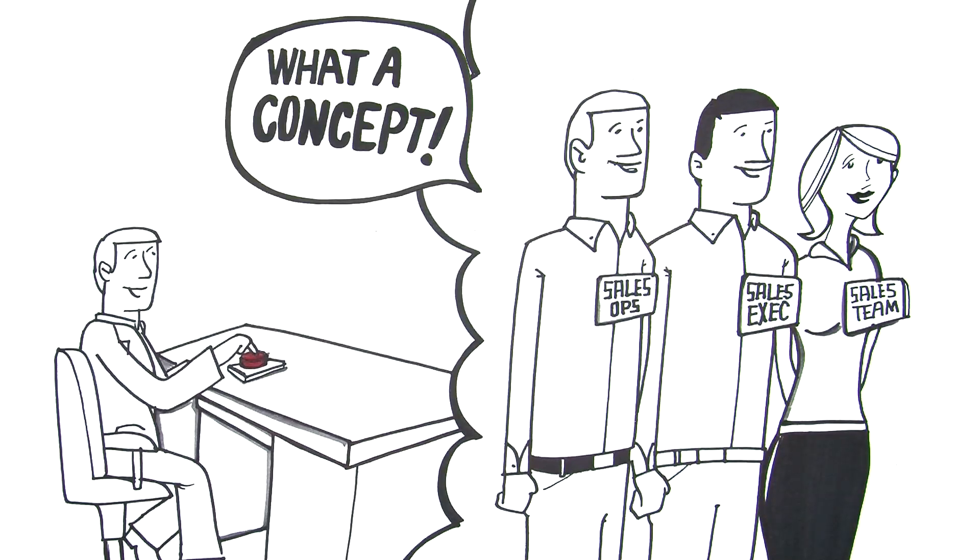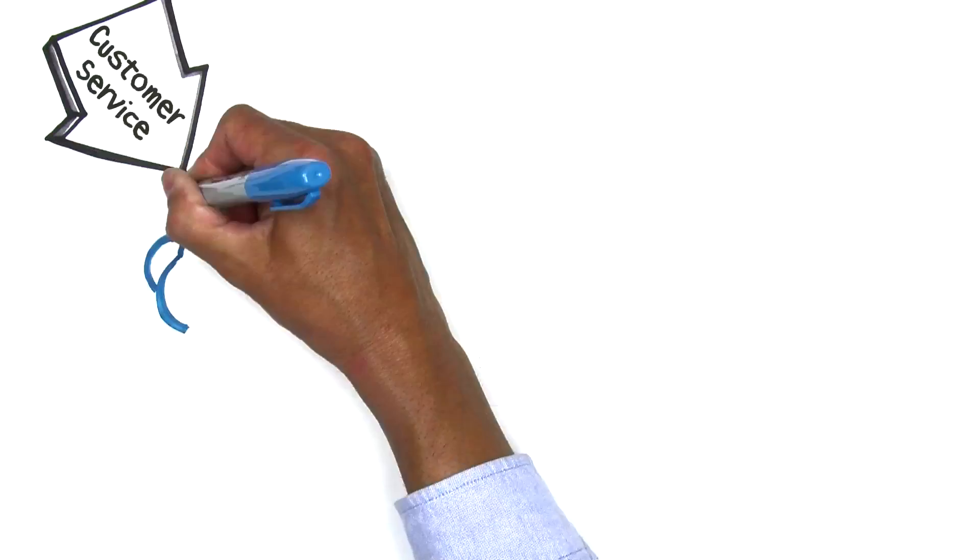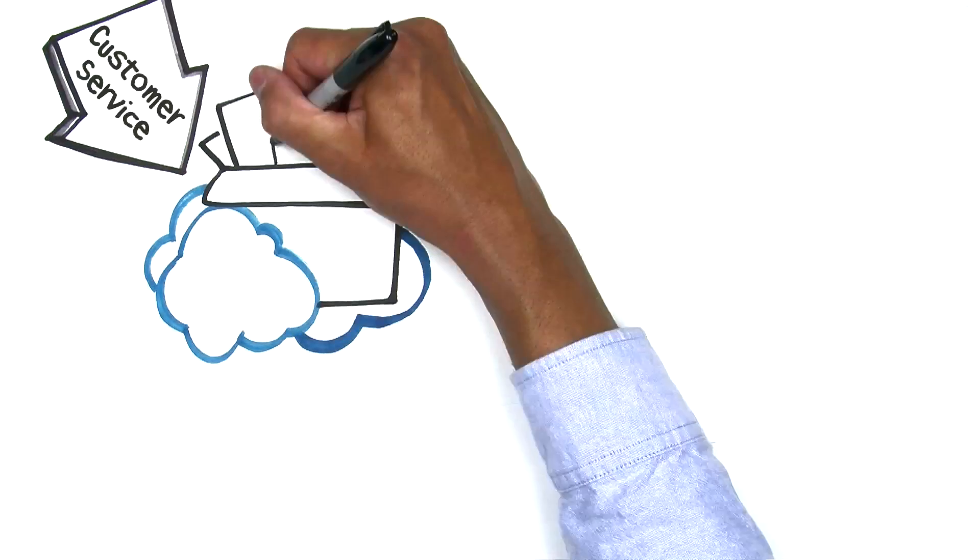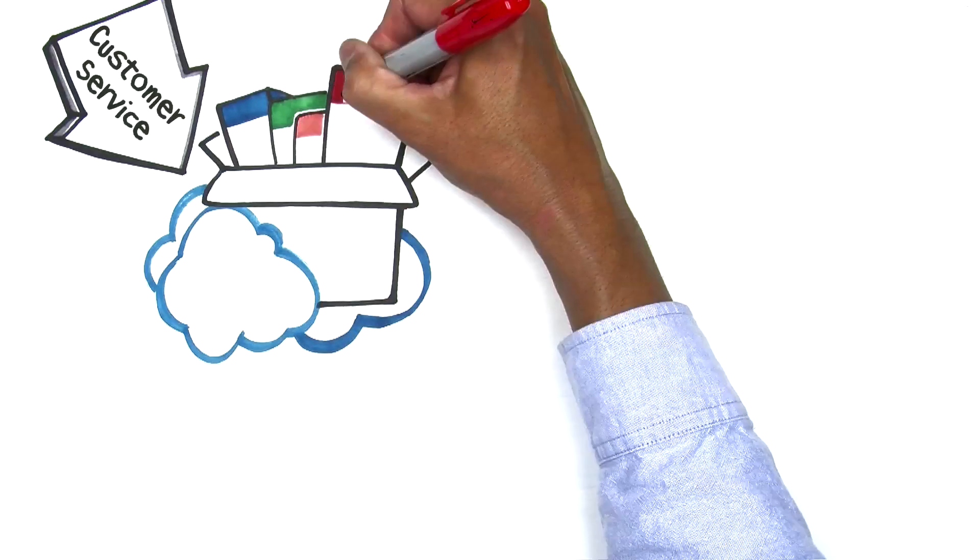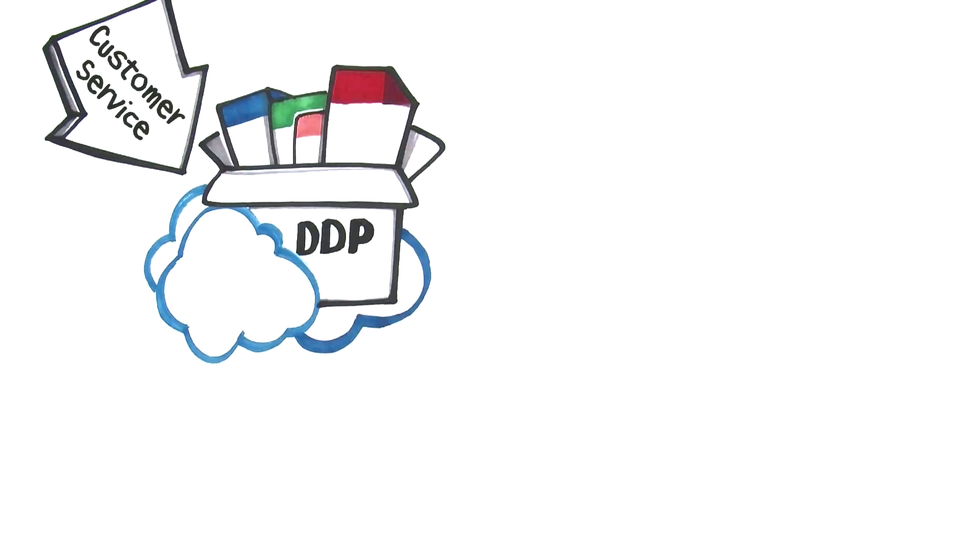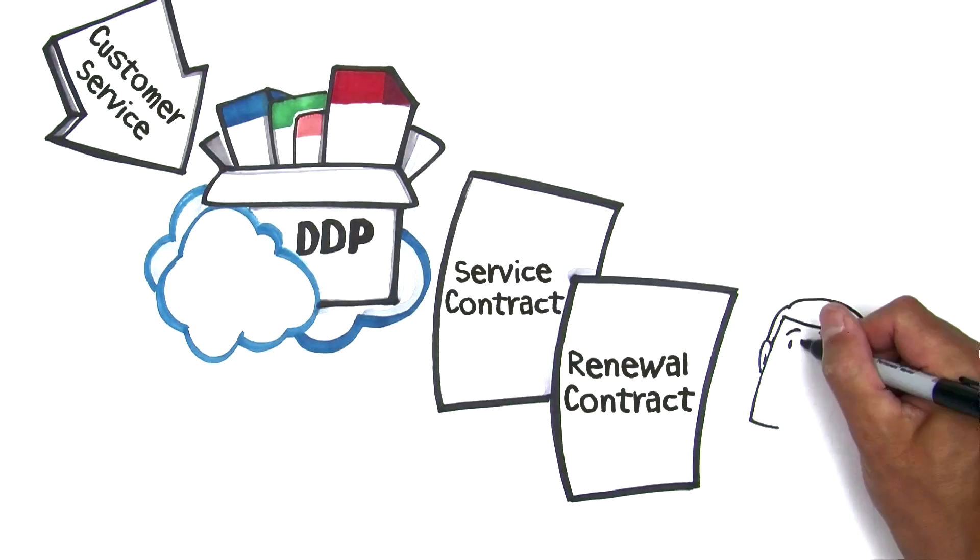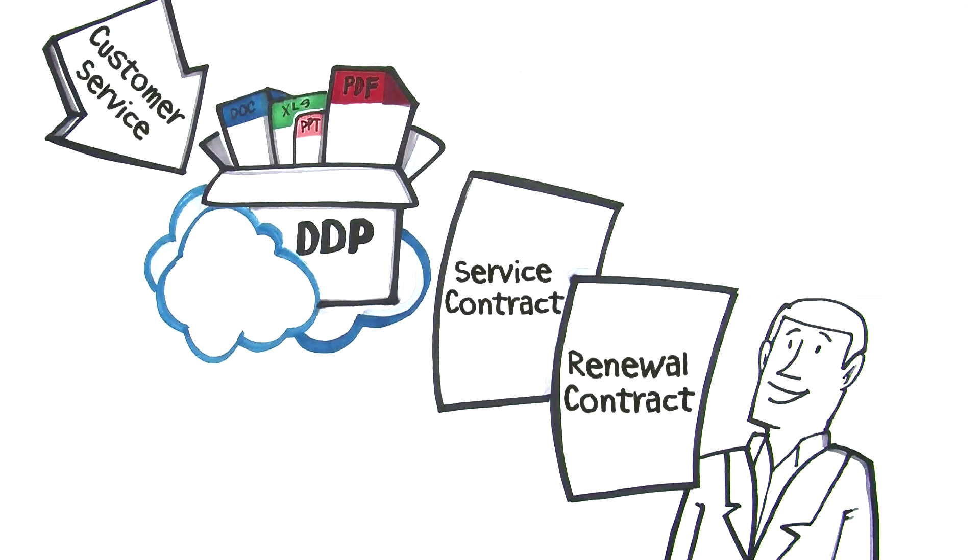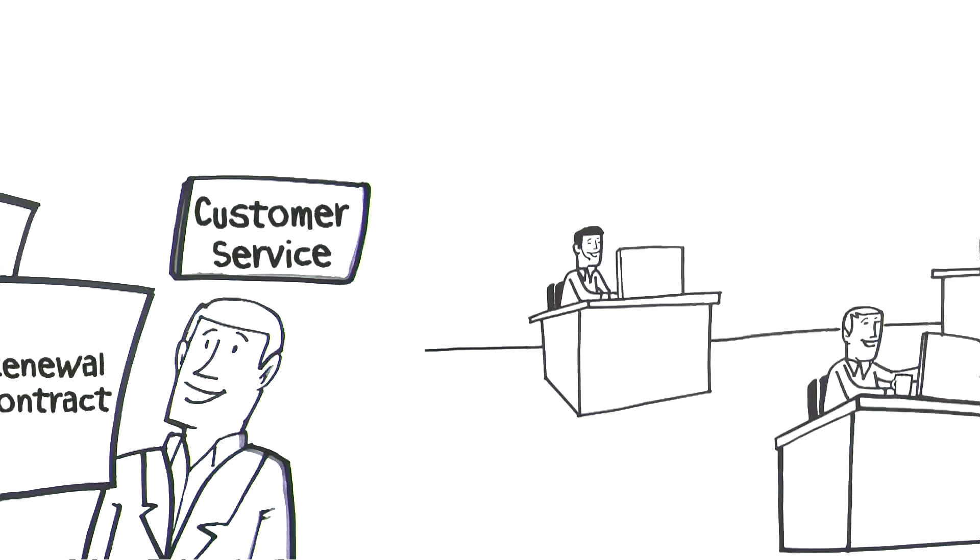What a concept! Did we mention, Drawloop is not just for sales. It can automate document creation across your entire organization, like those pesky service and renewal contracts. No more manual creation. Drawloop dynamically generates DDPs for these too, allowing your service team to take care of customers instead of chasing down customer information. How cool is that?